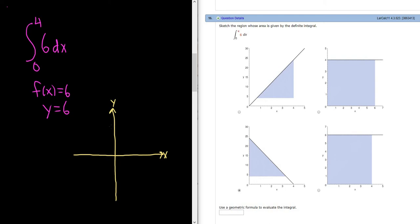And let's see, 6 is going to be maybe here, so this is 6. And we're going from 0 to 4, so we're going from here to here. So even though it's a horizontal line, it starts at 0 and it ends at 4.